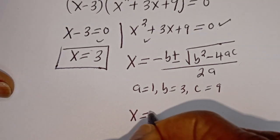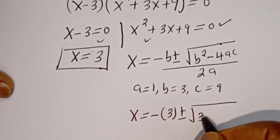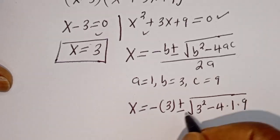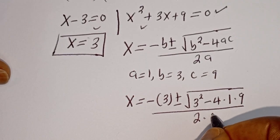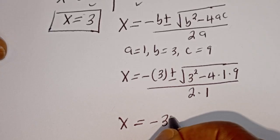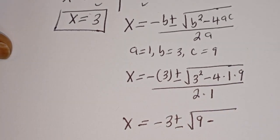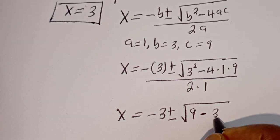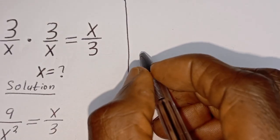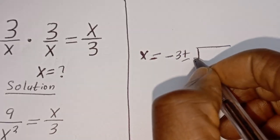Then s is equal to minus 3 plus or minus square root of 3 squared minus 4 multiplied by a, which is 1, multiplied by c, which is 9, divided by 2 multiplied by a, which is 1. Then s is equal to minus 3 plus or minus square root of 9 minus 36, that is 36, divided by 2.